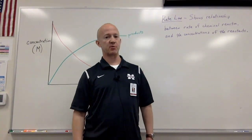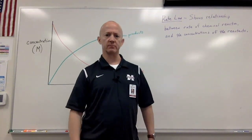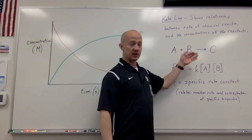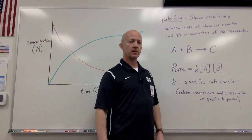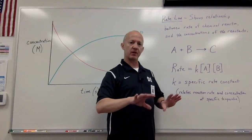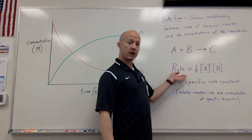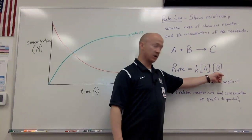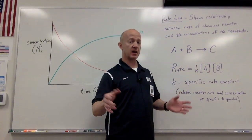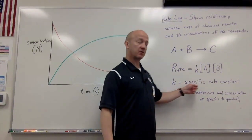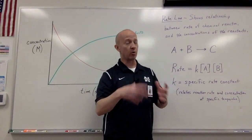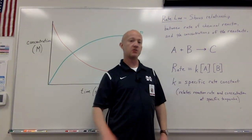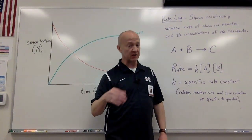Let's use a generic reaction as an example: reactant A and reactant B yielding product C. If we were to write a generic rate law, we'd write it this way: the rate is equal to K times the concentration of A times the concentration of B. K is what we call the specific rate constant — it's the glue that holds everything together, the constant by which we can have this relationship in the rate law.